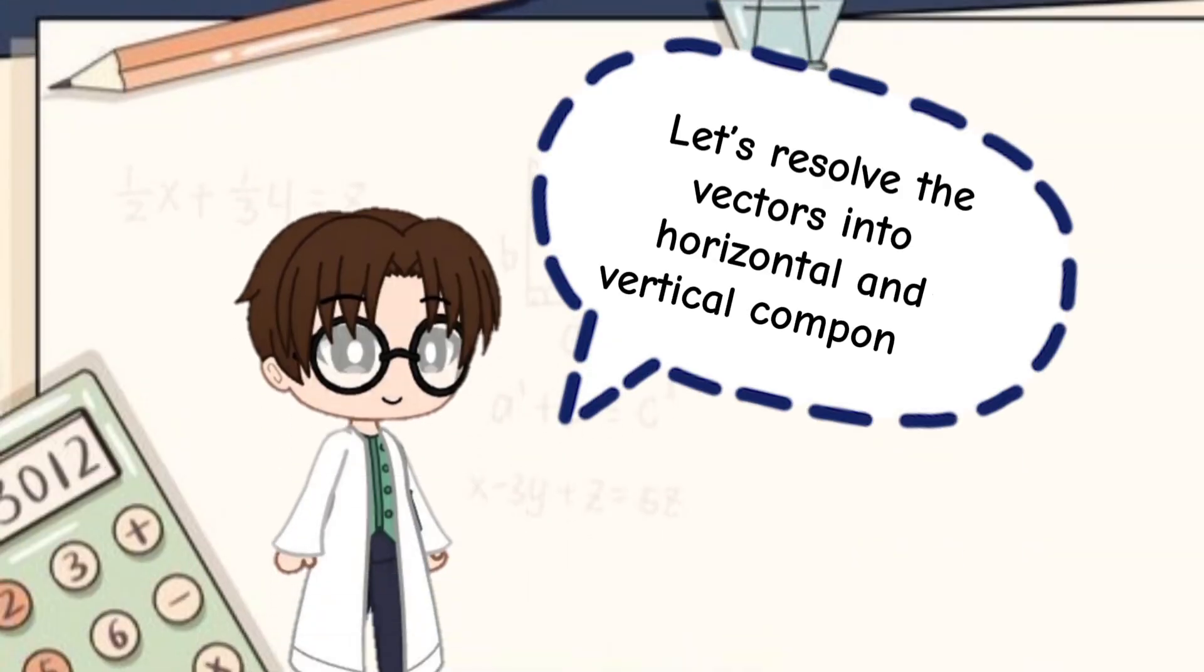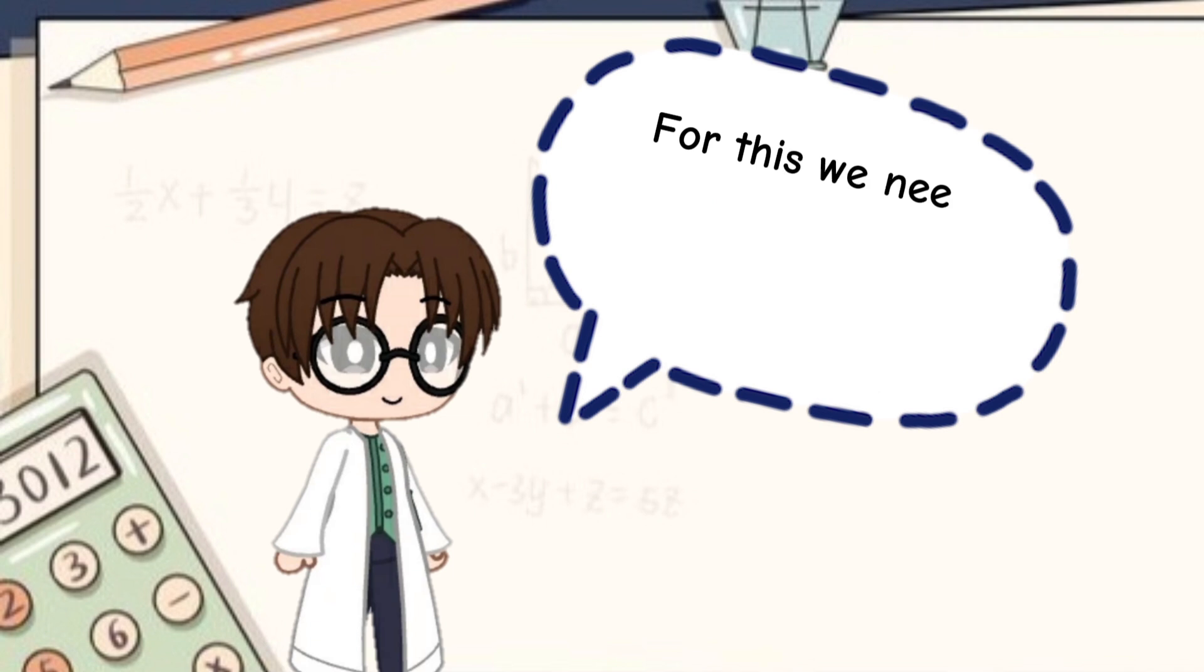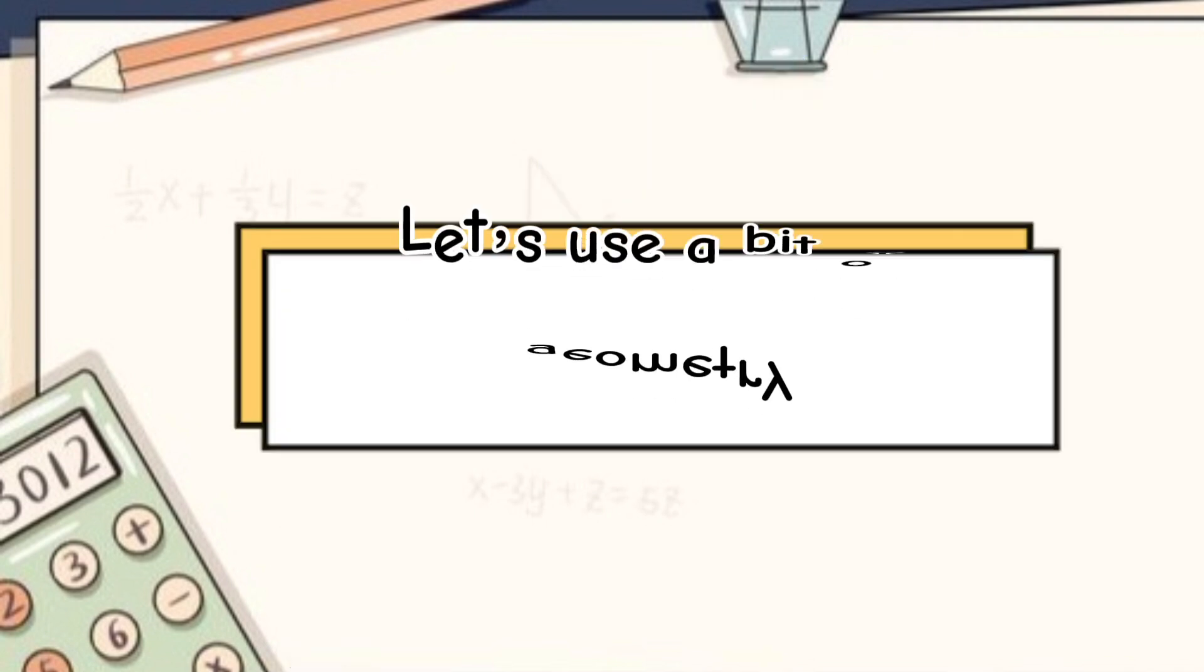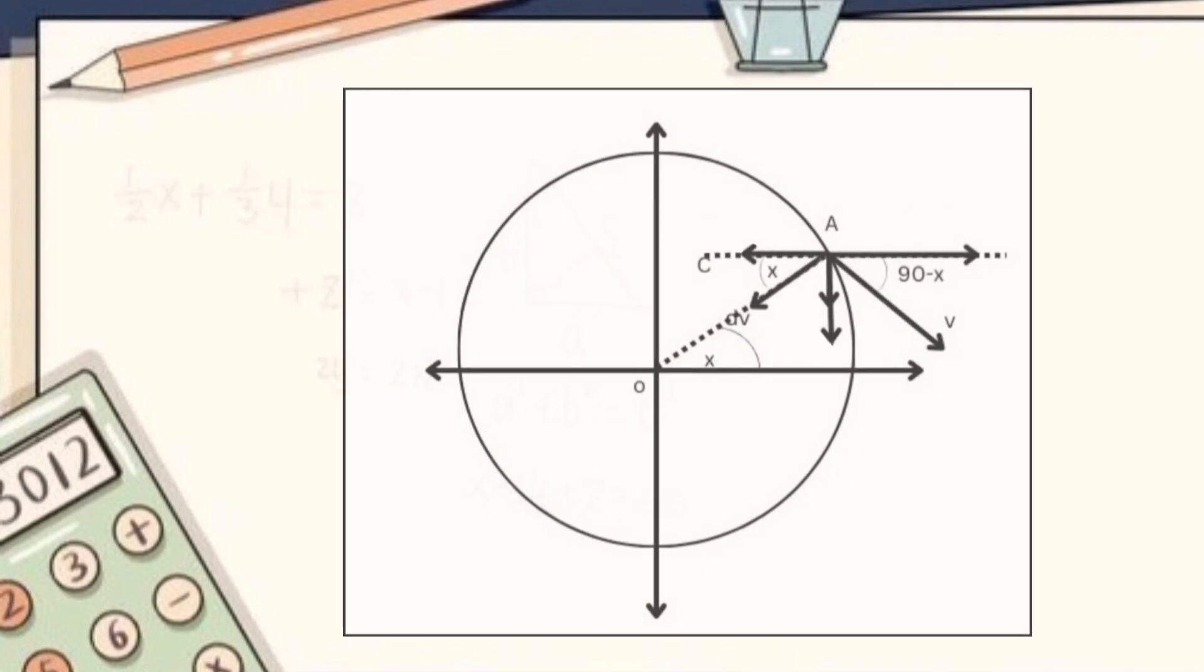Let's resolve the vectors into horizontal and vertical components. For this, we need to know the angle each of them makes with x-axis. Let's use a bit of geometry. So let's draw a line parallel to x-axis and passing through A, and name it AC.